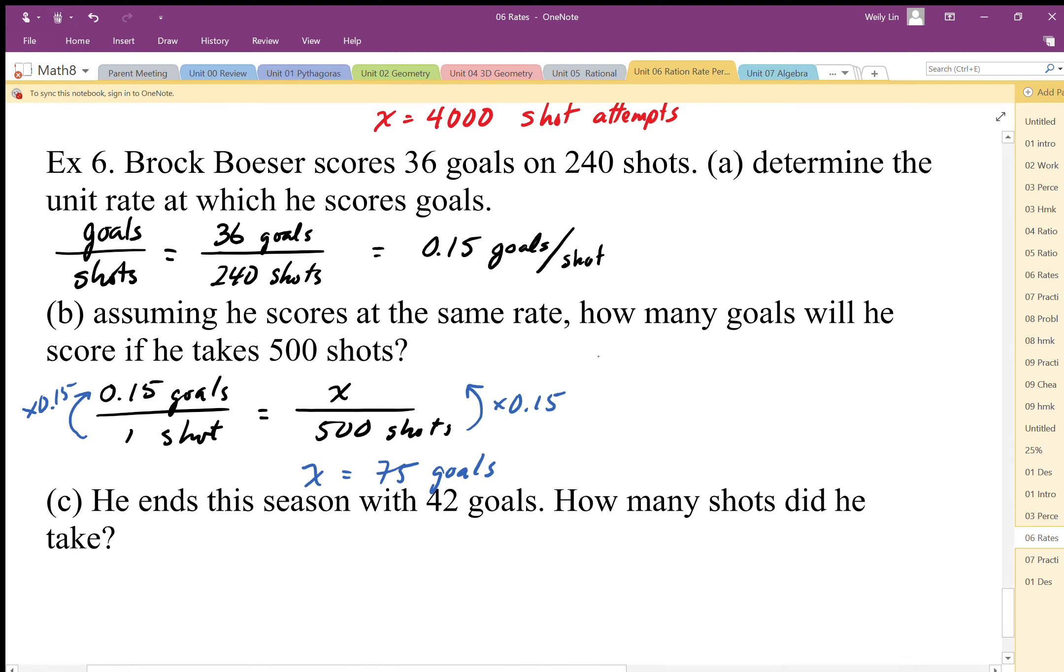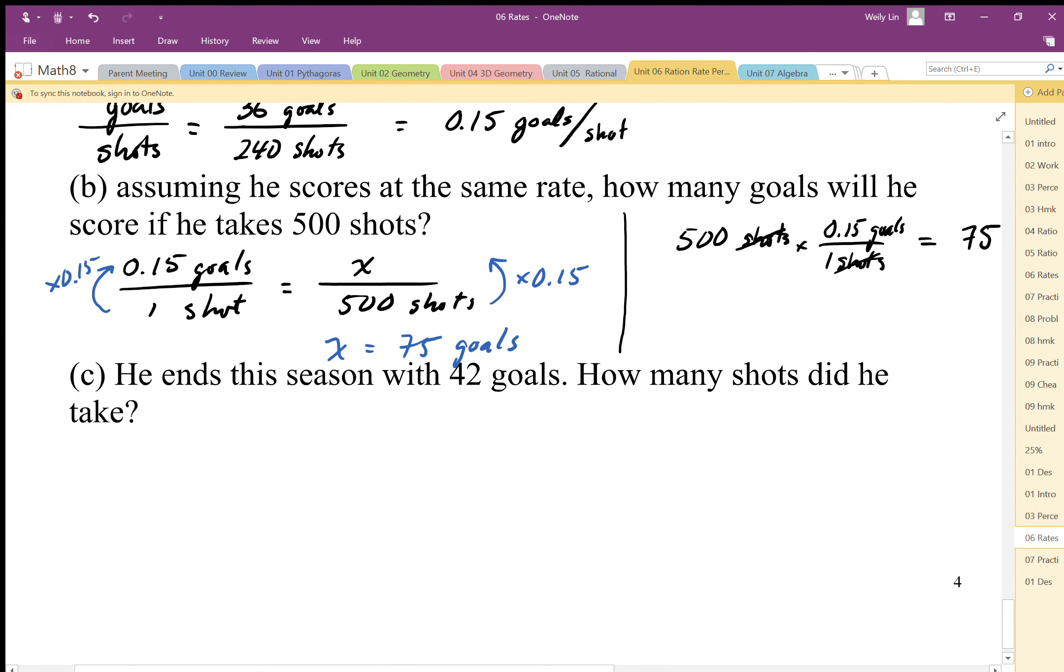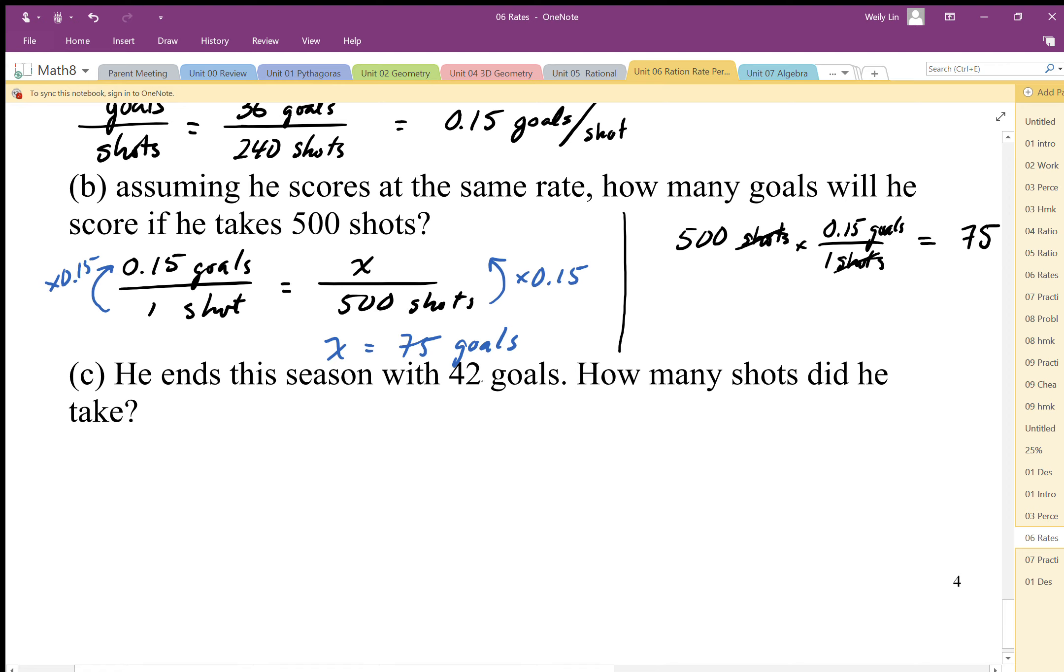We can use the multiplying strategy to solve some of these problems. If I have 500 shots and want to end up with goals, I can determine which direction to use my ratio by making sure the shots go on bottom and goals go on top. I have 0.15 goals—now I'm using my unit rate, but I actually don't need to use the unit rate. I could use the original ratio because both have shots in the denominator. Times by shots, divide by shots, these cancel out, and we're left with goals as our units. Multiply through: times on top, divide on bottom, I get 75 goals.